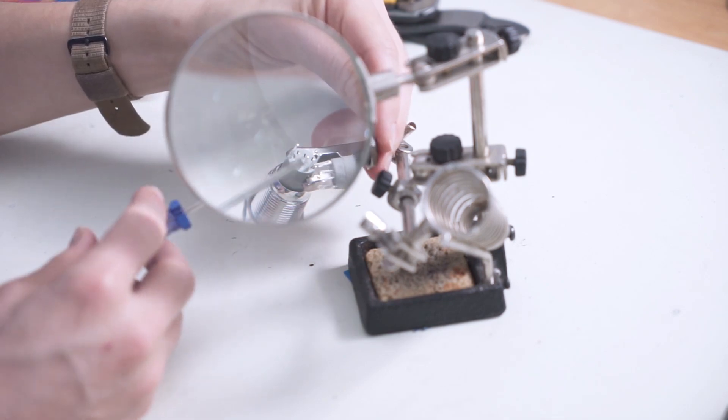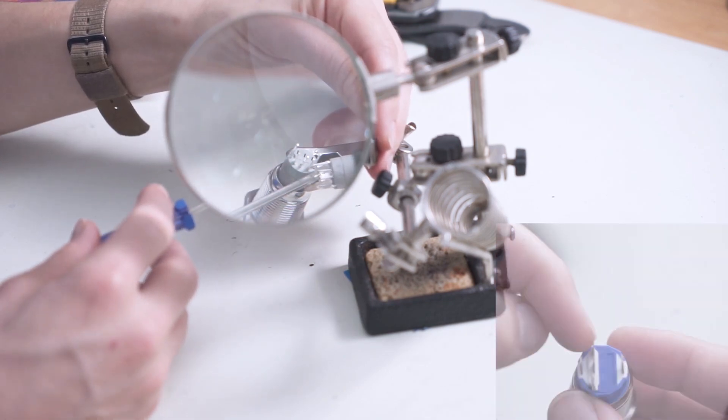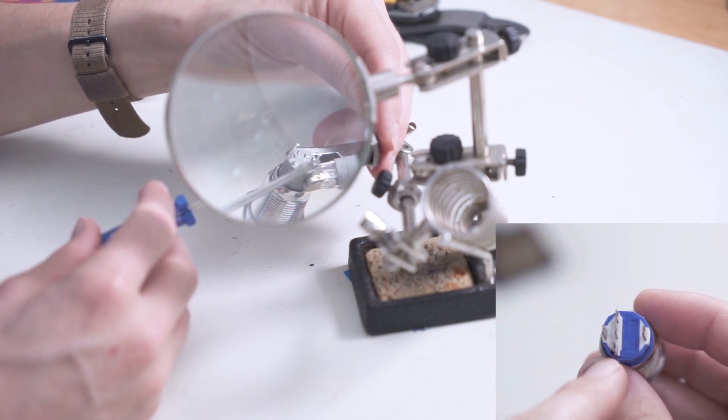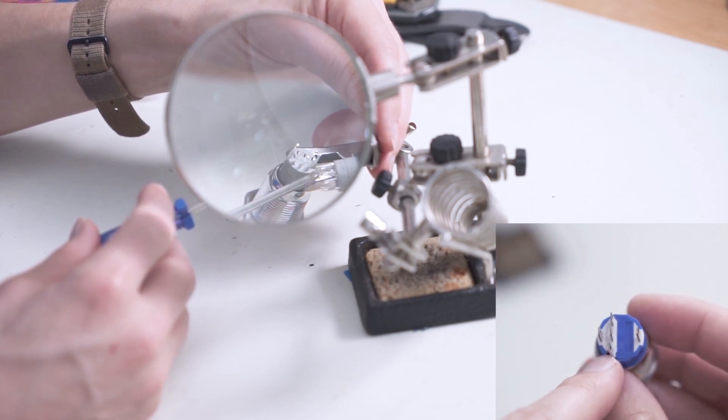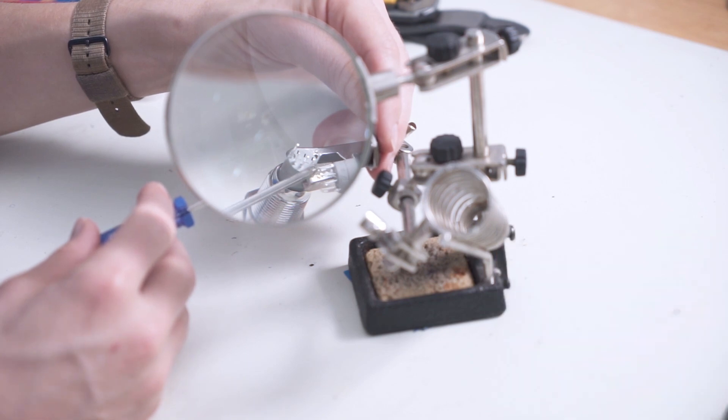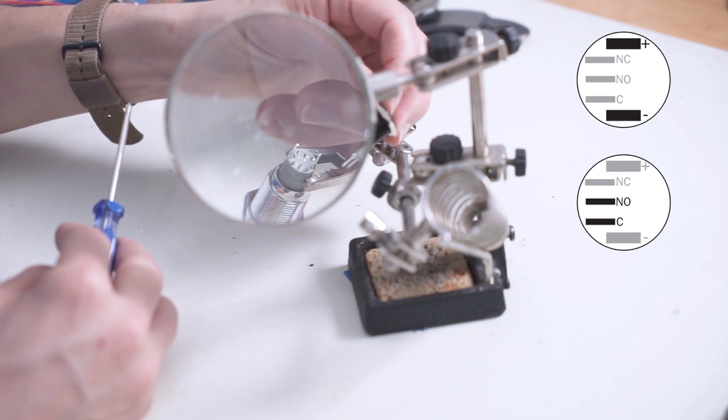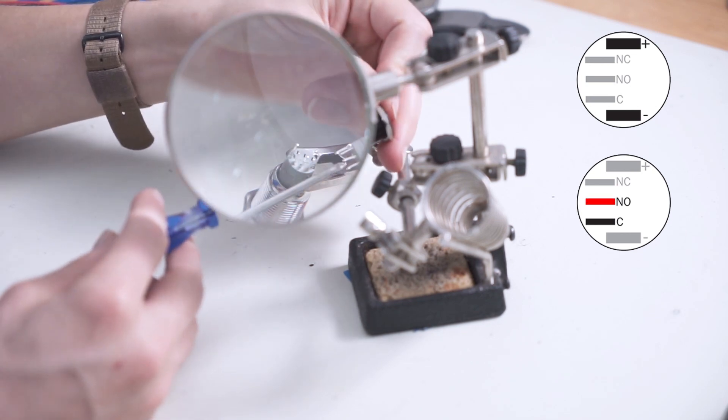The three terminals are C1, NO, and NC. NO stands for normally open. NC stands for normally closed. And the C1, or GND, stands for the ground. If you want your computer to turn on when you press the switch, then you want to use the NO and the C1, or the NO and the ground.